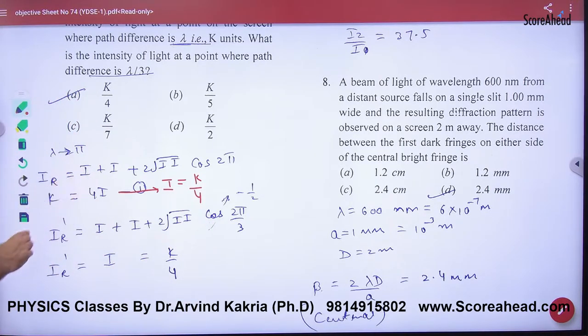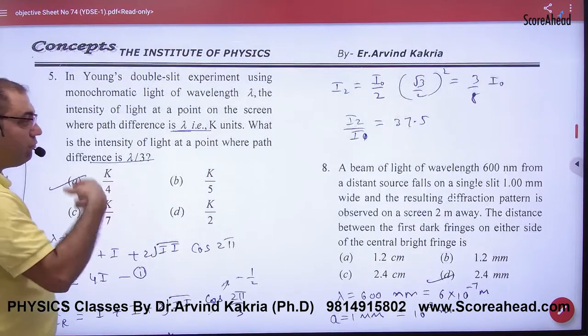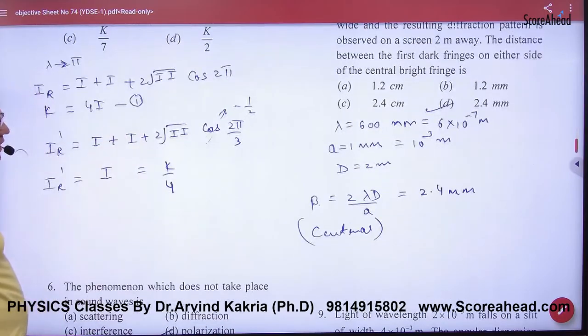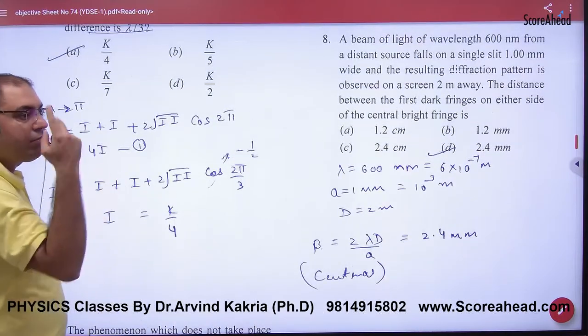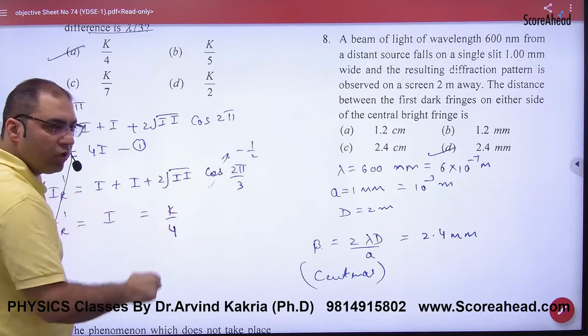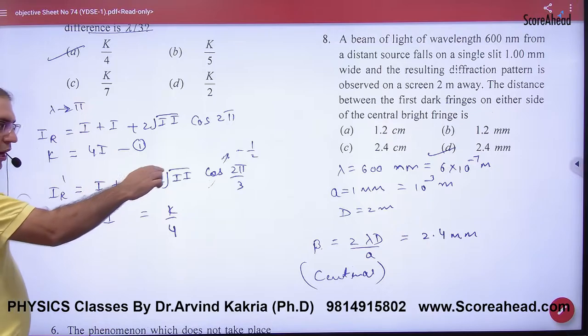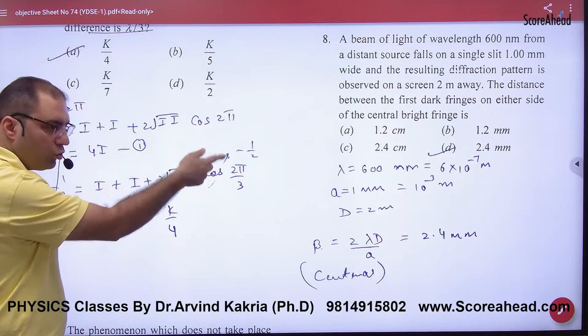Now, i is equal to k by 4. What is the resultant intensity? Tell me the resultant intensity where path difference is lambda by 3. Then we solve the case. Lambda by 3 means what? Lambda means 2pi. What is the phase difference? 2pi by 3. What is the intensity? I plus i plus 2i into i cos of 2pi by 3.